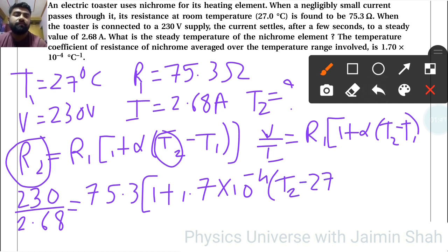Now for the calculation part: 230 divided by 2.68, then divided by 75.3.